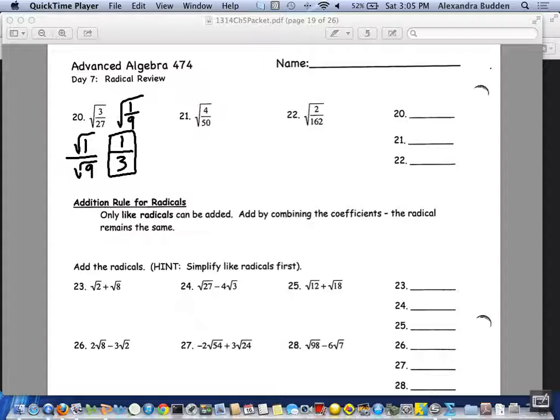Now moving on to 23. It says only like radicals can be added. You want to add by combining the coefficients and the radical stays the same. In example 23, the directions say add the radicals, simplify like radicals first. Root 2 cannot be simplified at all, but root 8 can. Largest perfect square that goes into 8 is 4, so it's root 4 and root 2.